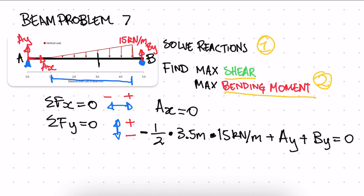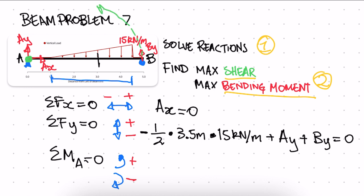Our final equilibrium equation is sum of moments. We'll choose point A — sum of moments around point A equals zero. Anything in the anti-clockwise direction is positive, clockwise is negative. By is acting in the anti-clockwise direction around point A, and the total distance is five meters, so it'll be a positive By times five meters.